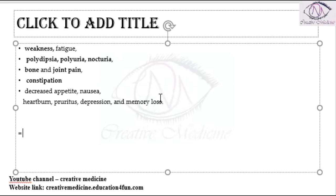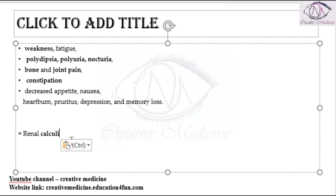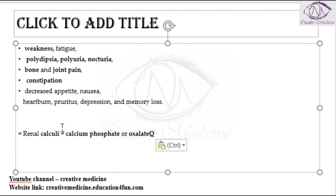In primary hyperparathyroidism, renal calculi are also seen. These renal calculi are composed of either calcium phosphate or calcium oxalate stones.